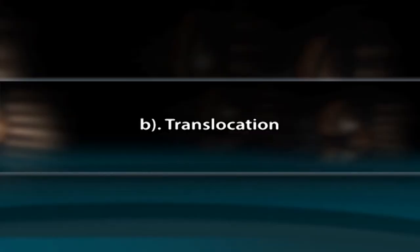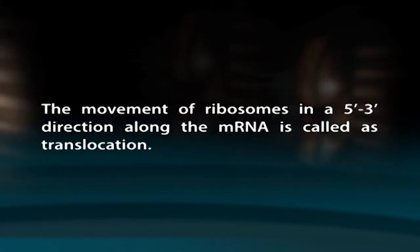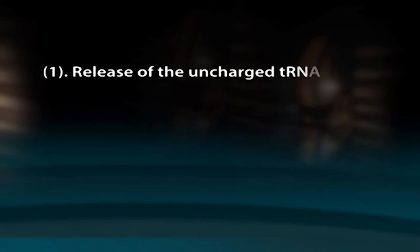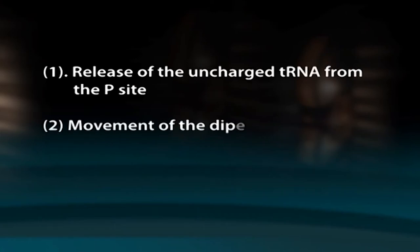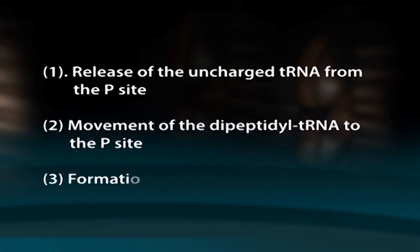Translocation is the movement of the ribosome in a 5' to 3' direction along the mRNA, catalyzed by EF-G. EF-G forms a complex with GTP which is hydrolyzed to GDP and Pi. This movement results in: release of uncharged tRNA from the P site, movement of the dipeptidyl-tRNA to the P site, and formation of an unoccupied A site.